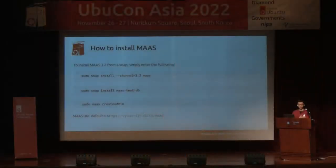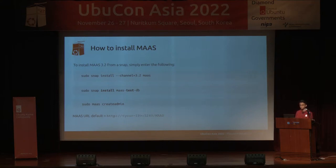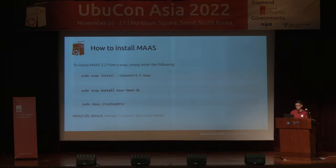Here are just three steps to install MAAS. The first is to use snap install with the channel — select your version; I'm using 3.2 — then MAAS. For POC or demo, just install MAAS with test.db — you don't need to install a database server. But for production, you need to install PostgreSQL with the HA feature because it's important — all the data is located in the database. After that, create a MAAS admin user with the MAAS create-admin command. Then you can visit your URL at HTTP, your IP address with the default port 5240 slash maas. Very easy!